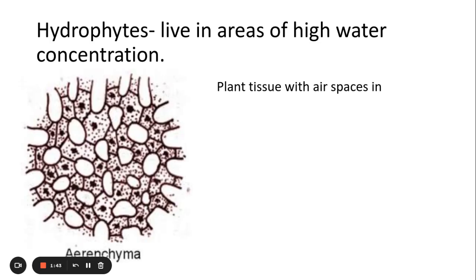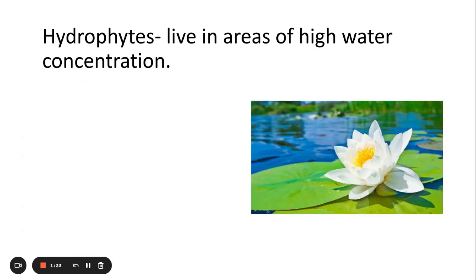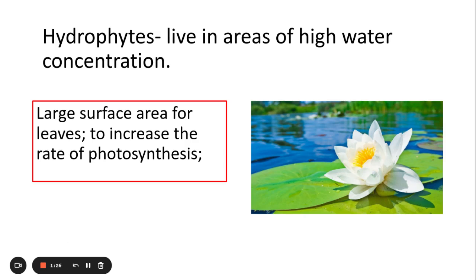Hydrophytes have a tissue called aerenchyma, which is basically plant tissue with air spaces. This allows buoyancy because they live in water and need to be able to float. They also have very large leaves to increase the rate of photosynthesis, because water is not a limiting factor for them.